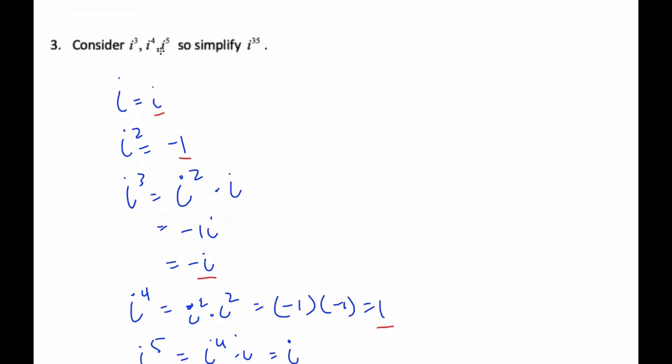And so what happens with i to various exponents, it just cycles through these four values, i, negative one, negative i, and one, back to i, negative one, and so on and so forth.